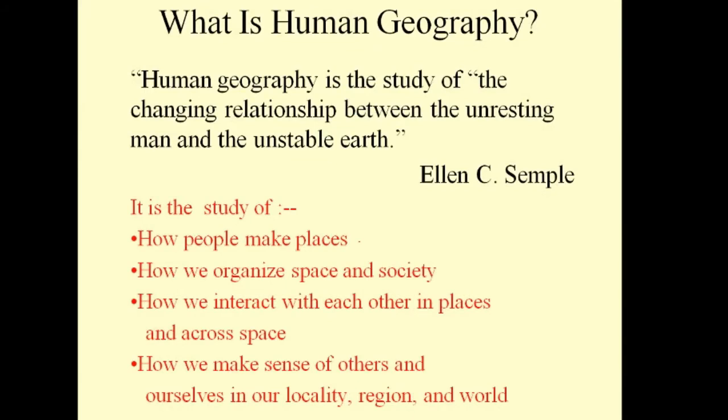First of all, what is human geography? According to Ellen C. Semple, human geography is the study of the changing relationship between the unresting man and the unstable earth. Here, the unresting man stands for the man who is always trying to make changes to the environment, and unstable earth includes the changes which take place continuously on the surface of the earth, also known as geomorphic processes, which you have already read in 11th standard.